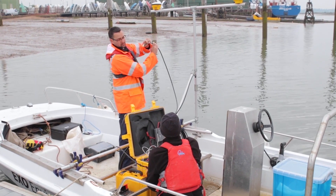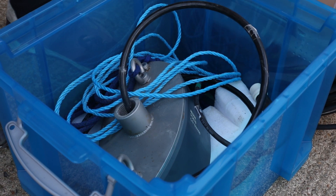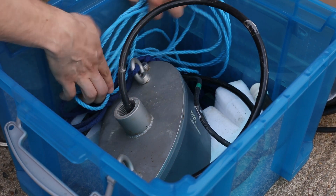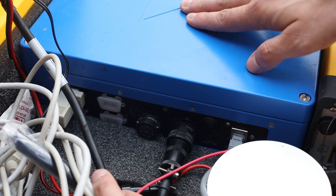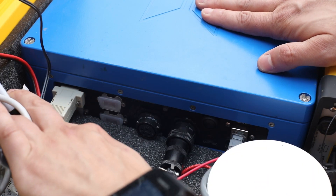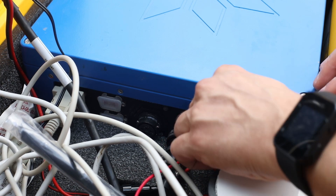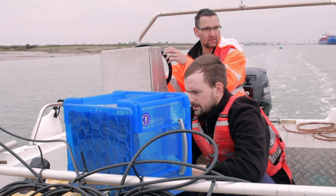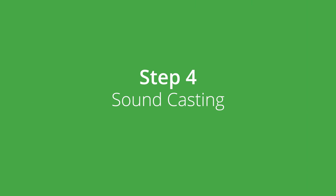A transducer is then attached to the underwater section of this frame, and the GPS antennas are attached at the top of the frame for the best signal. An echo sounder and GPS controllers are then connected via marine cables to the control computer. The software is then set up with details about the specific survey.